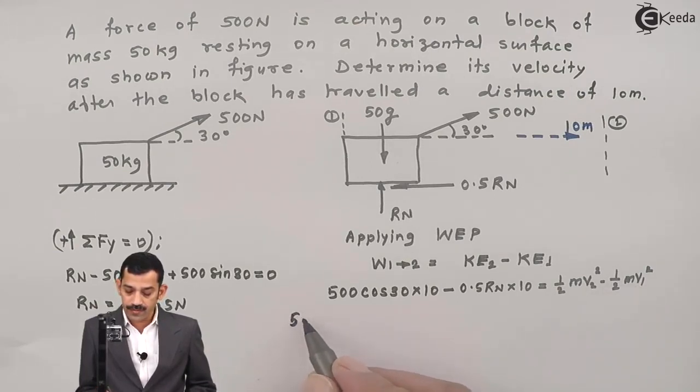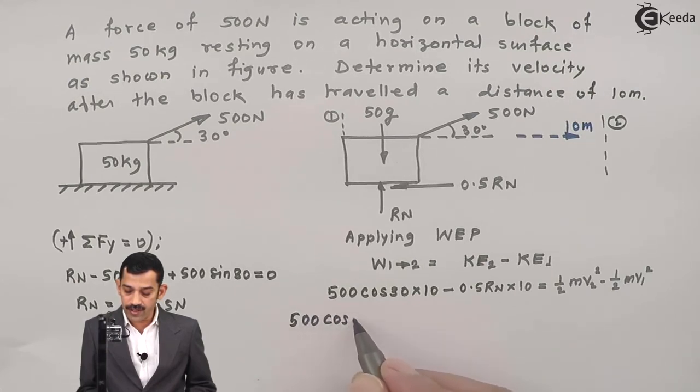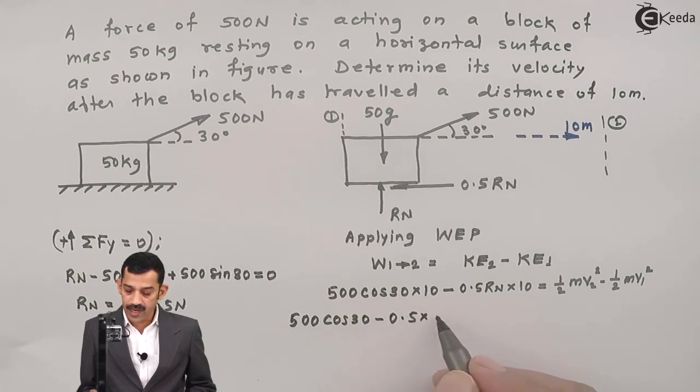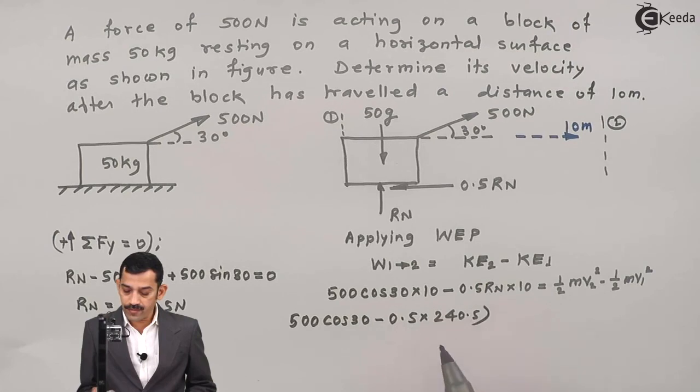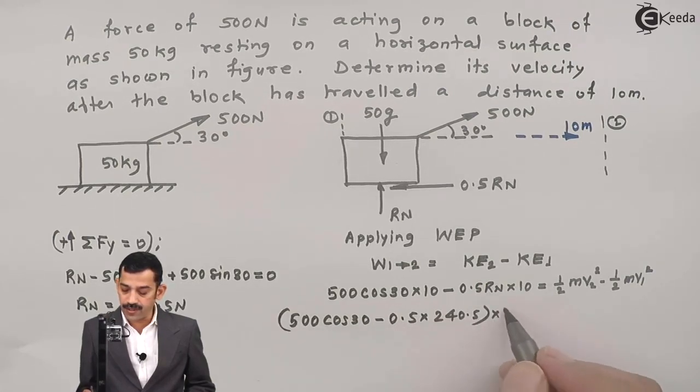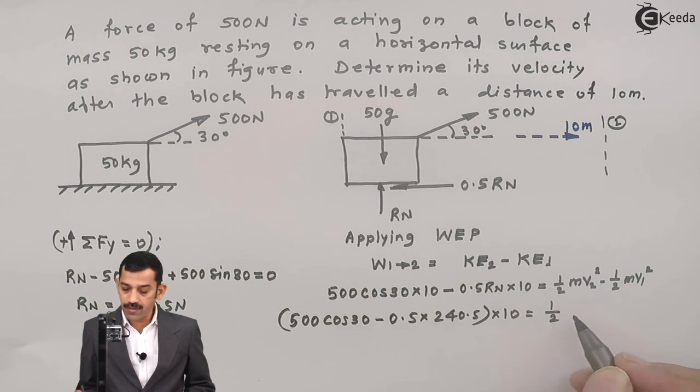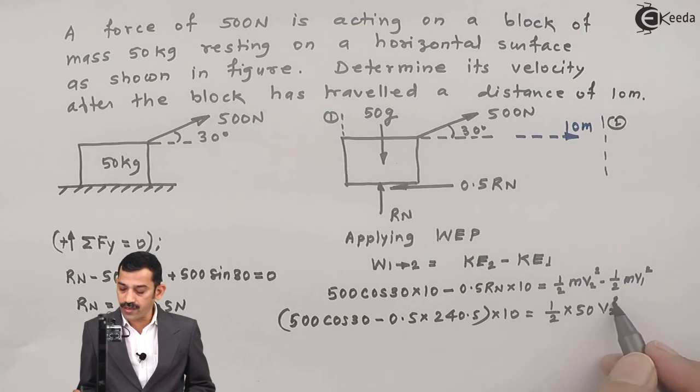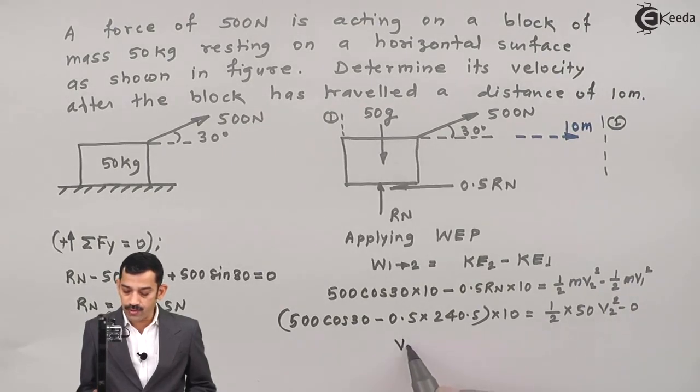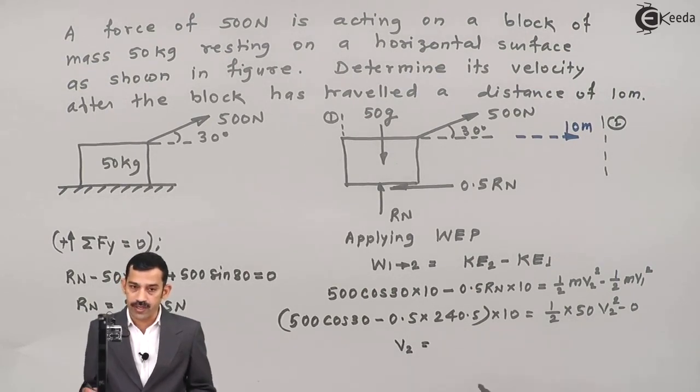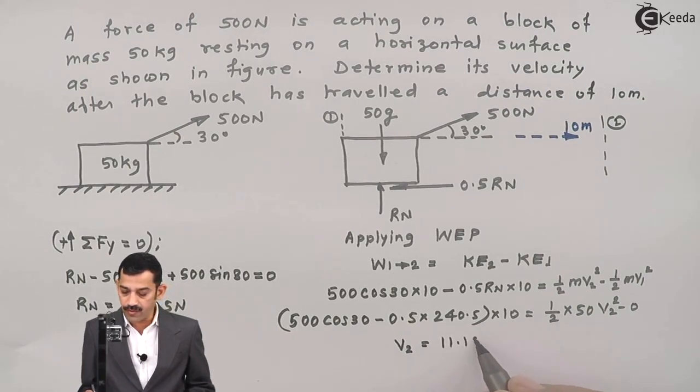That means what you will get here: 500 cos 30 times 10, minus 0.5 times RN is 240.5, multiplied by displacement 10, equal to half, mass of this block is 50 kg, substitute here 50, V2 squared minus 0. That means unknown term is only V2. Easily you will get velocity of block after moving 10 meters. If we calculate using calculator, this velocity comes out to be 11.185 meters per second.